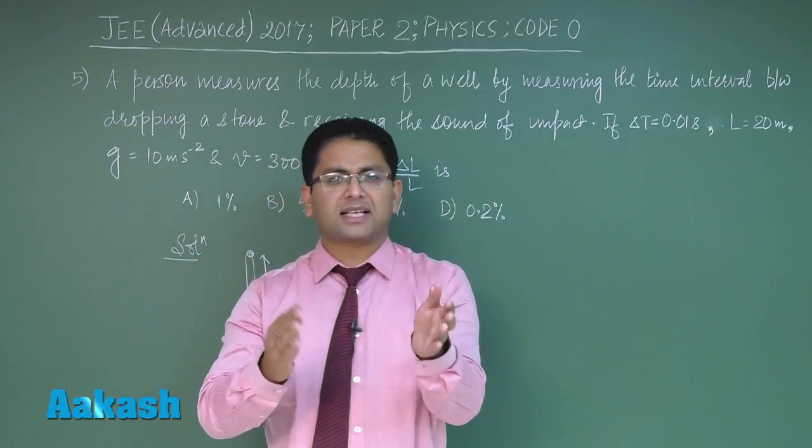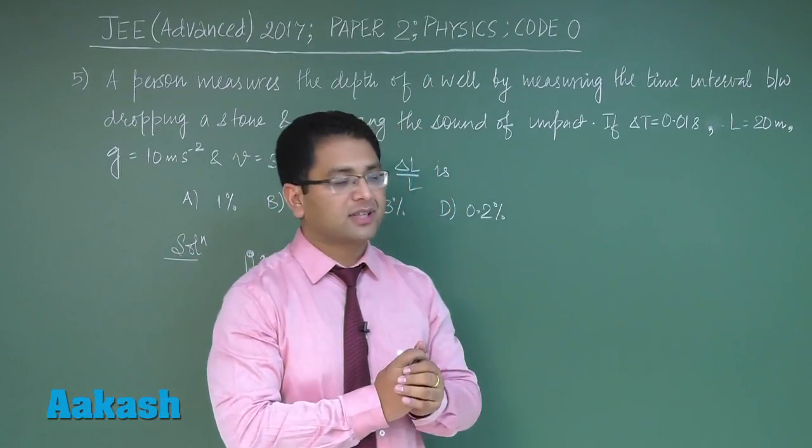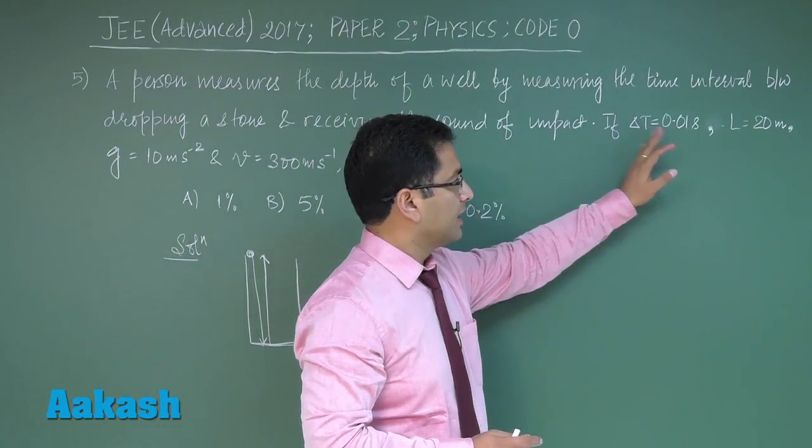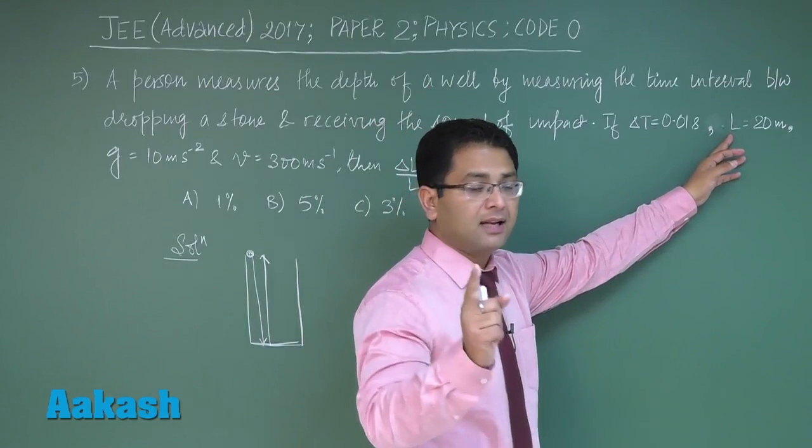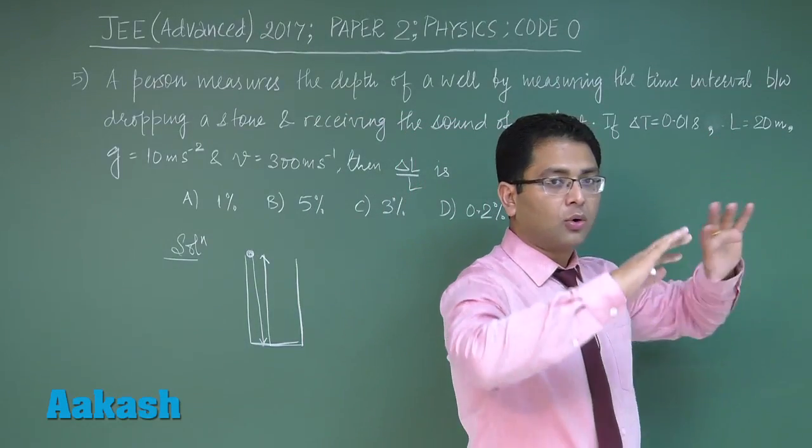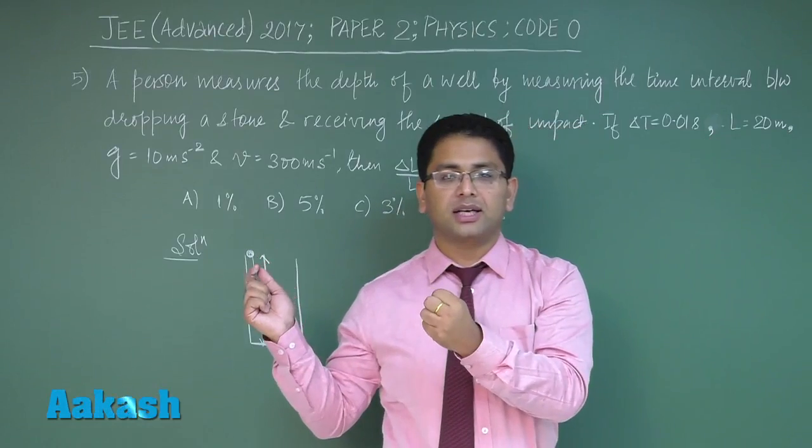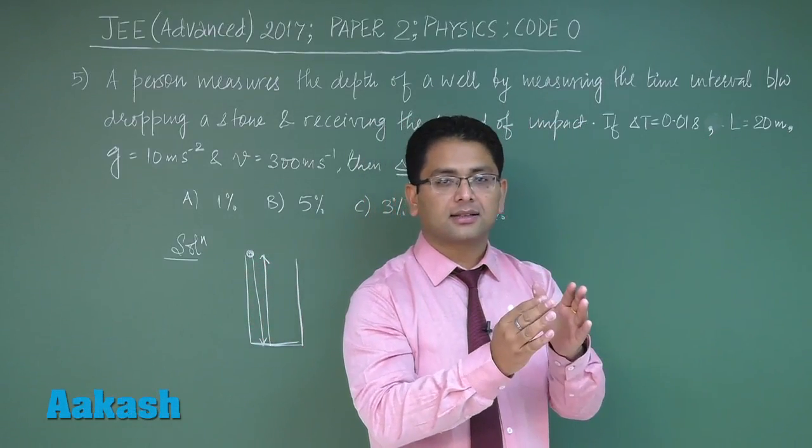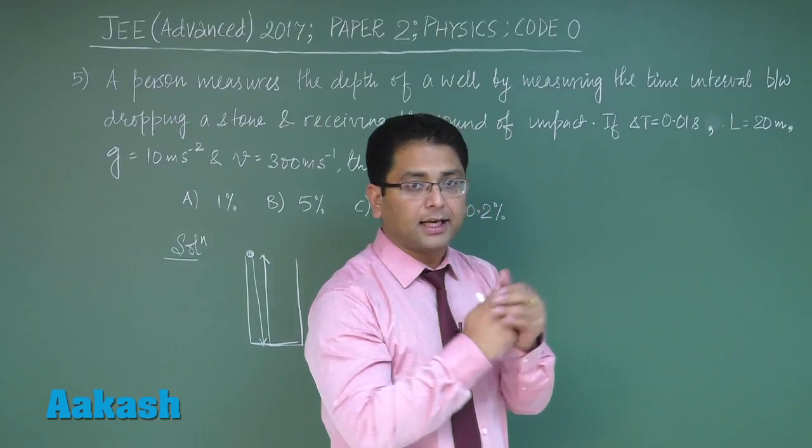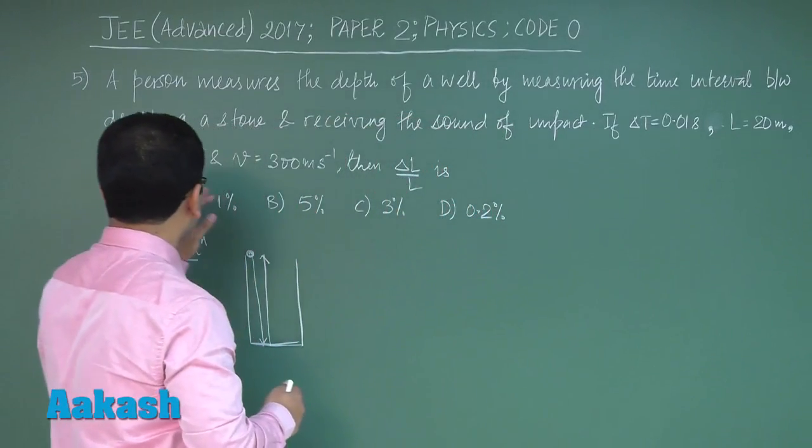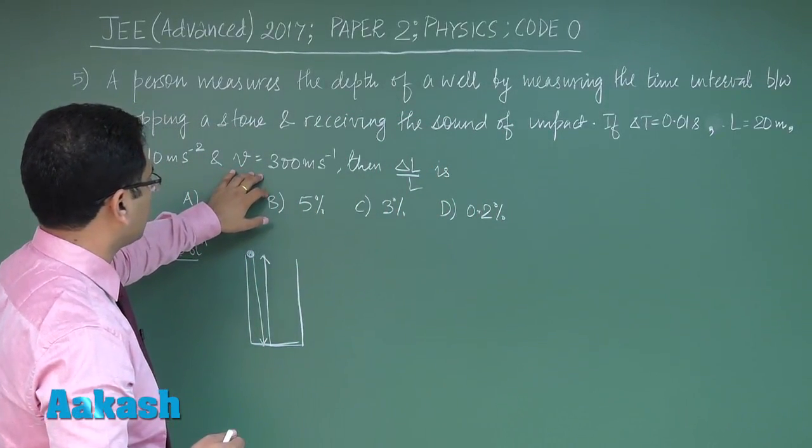L has an error because the whole idea is to measure the length. So when you are measuring length, there will be a certain error. The acceleration due to gravity g and velocity of sound V are given without any error.